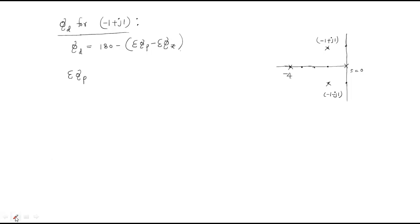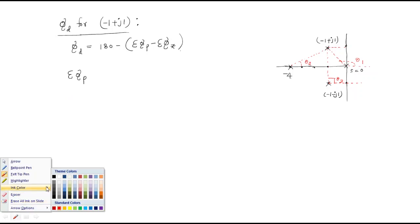We label the angle between minus 1 plus j1 and the pole at s=0 as theta1, the angle to the pole at minus 4 as theta2, and the angle to the conjugate pole as theta3. Theta1 was computed previously as 135 degrees.